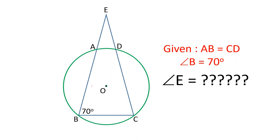In this video we are presenting a very simple question but it requires an understanding of theorems of a circle. The question is that AB and CD are equal, angle B is 70 degrees, what will be the value of angle E? So let us see how we can solve this question.